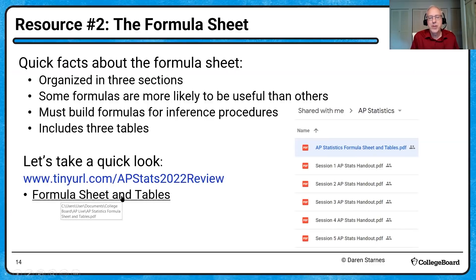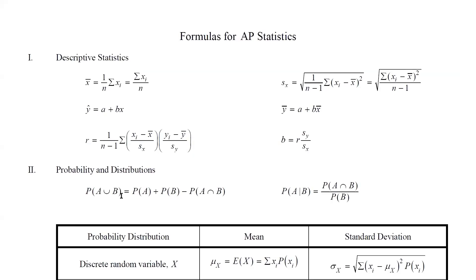We'll jump over to the formula sheet and tables. If you're following along on the handout, click the hyperlink. If you need extra time, just pause the video. There are three sections. Up top, we have descriptive statistics — the sample mean and sample standard deviation for one quantitative variable. Below that, four formulas relate to relationships between two quantitative variables: the equation of the sample least squares regression line, a formula noting that the point x-bar, y-bar lies on the least squares line, a formula for the correlation coefficient, and a formula relating the slope of the line to the correlation and the standard deviations of x and y.